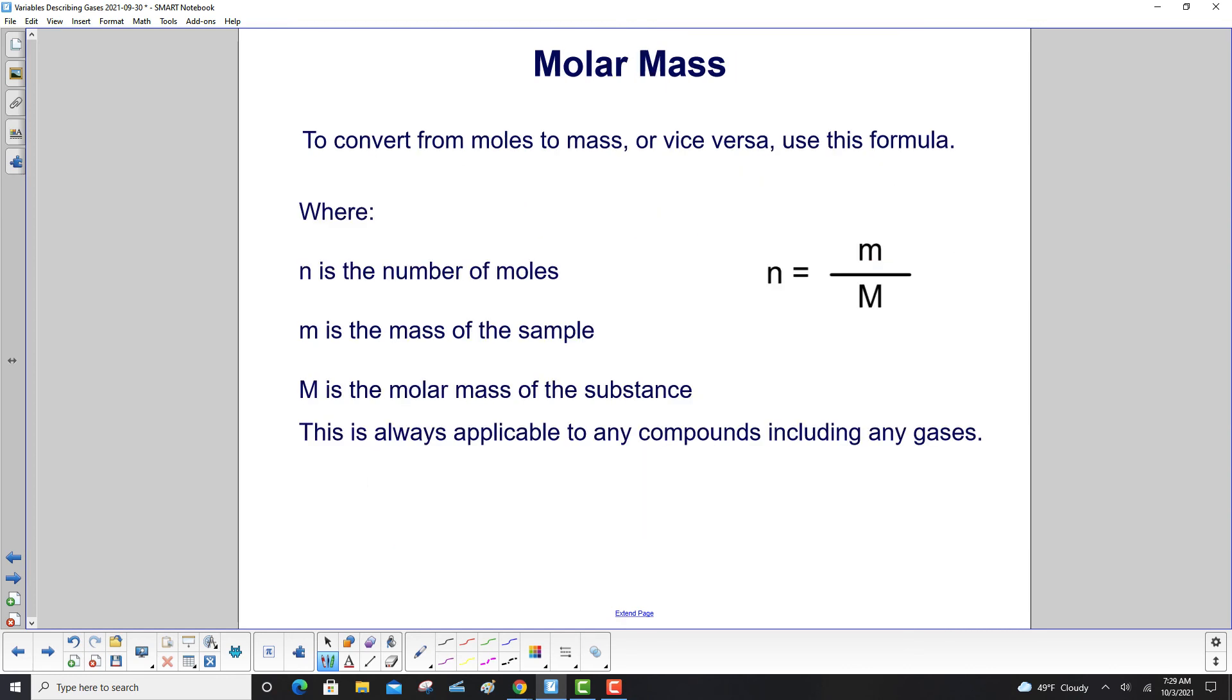To convert from moles to mass, or vice versa, use this formula. N is the number of moles. Little m is the mass of your sample. Capital M is the molar mass of the substance. This is always applicable to any compounds, including gases.